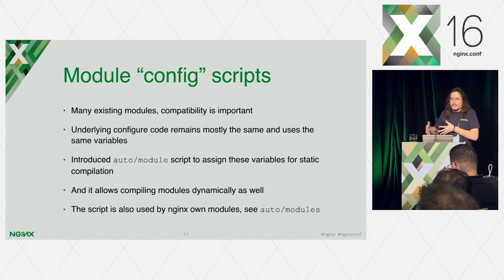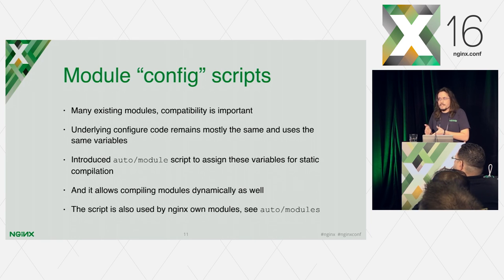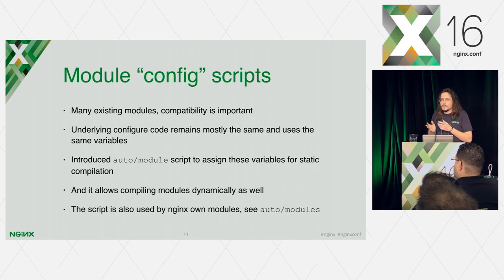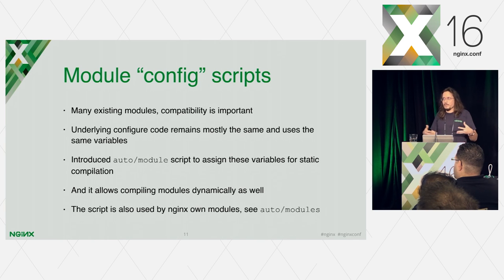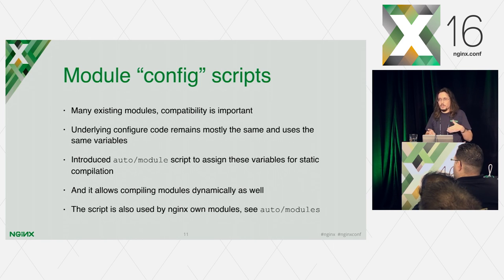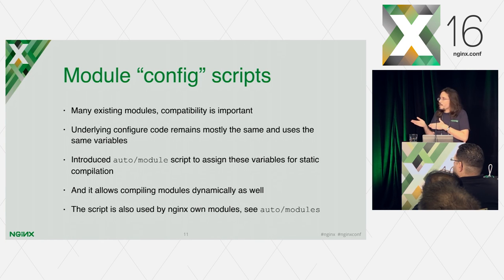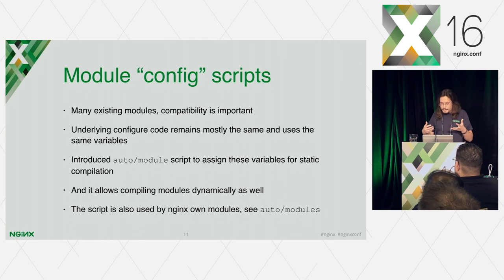Nginx configuration then recognizes these variables and uses them. We've left everything as is, so the same variables are still used by Nginx configuration. We've introduced an after_module script to assign these variables, so now there is an interface to assign these variables for static compilation, and it also knows how to assign variables for dynamic compilation. So by converting your module config script to use the after_module script, you make it more clear and also add dynamic compilation support. We will later take a look at how to do this for an example module, and it's really trivial.